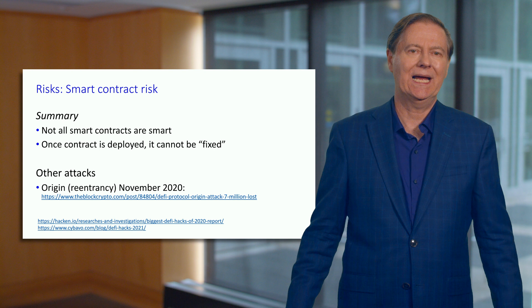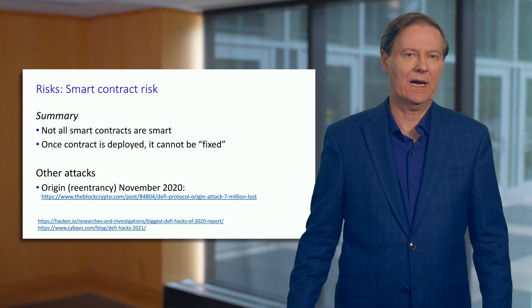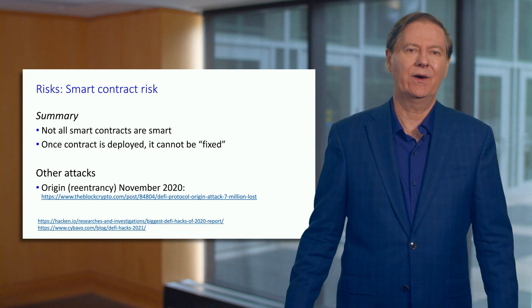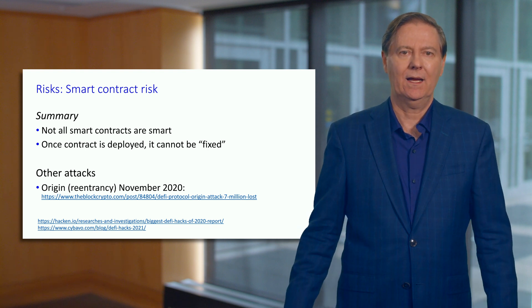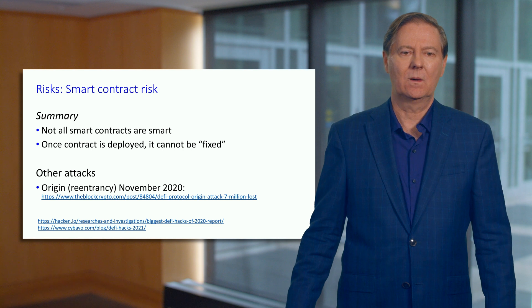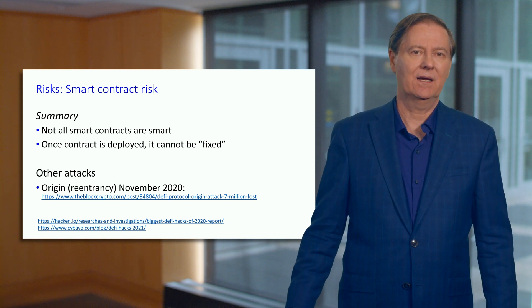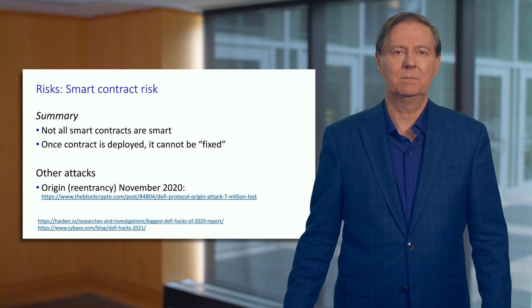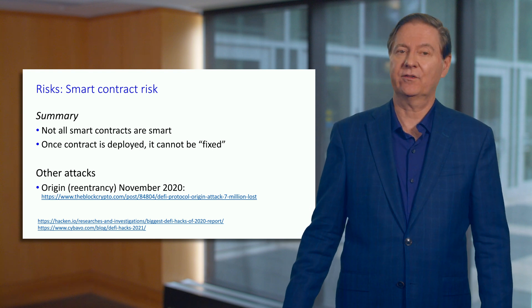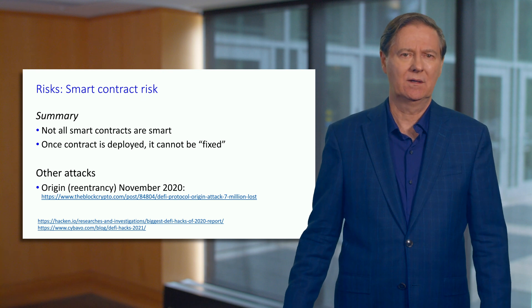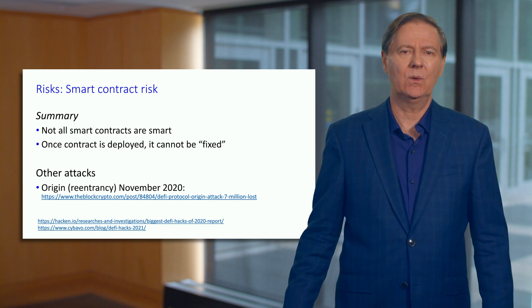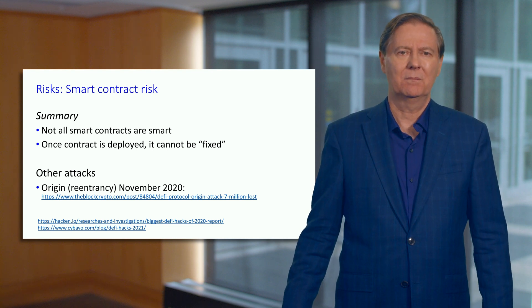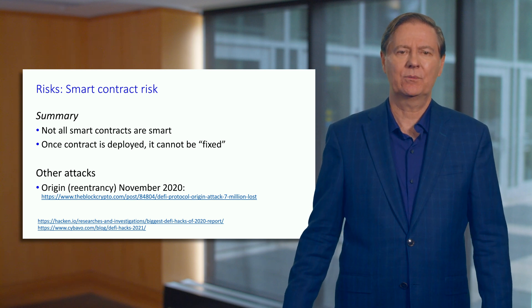The bottom line: we call them smart contracts, but smart contracts are just algorithms. With any algorithm, it could be high quality or it could have a flaw. Once you deploy with a flaw, it is set in stone on the Ethereum blockchain. We did talk about rewriting history — the DAO fork — but that was very early Ethereum in 2016, and the probability of that happening again today is pretty close to zero.